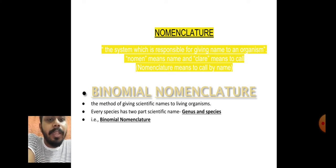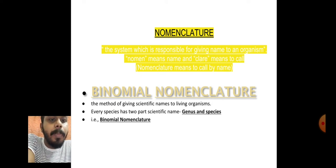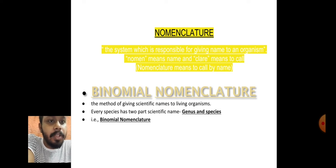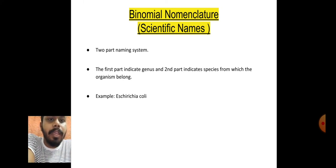Now let's come to binomial nomenclature. In the name we can see 'bi,' which means two, so it is a two-naming system. The organism will have two names. It is a method of giving scientific names to organisms, and every species has a two-part scientific name: the first is the genus name and the second is the species name.